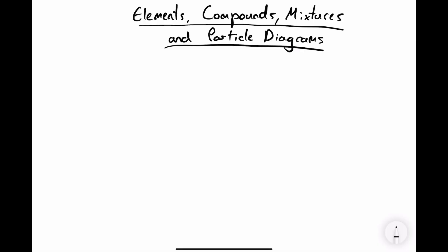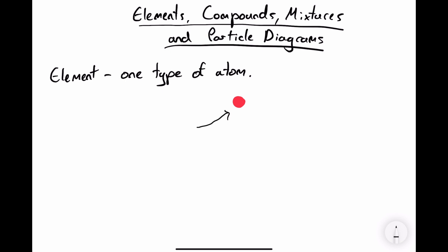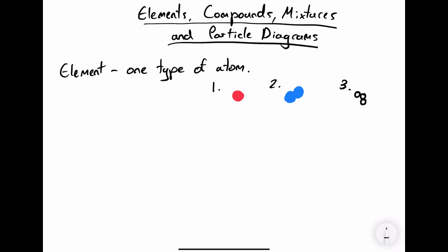In this video we're going to look at elements, compounds, mixtures and particle diagrams. An element is one type of atom. We can show atoms using spheres, something that looks like this. When you draw it on paper it appears 2D. Here are three examples of the types of particle you could see in an element particle diagram.